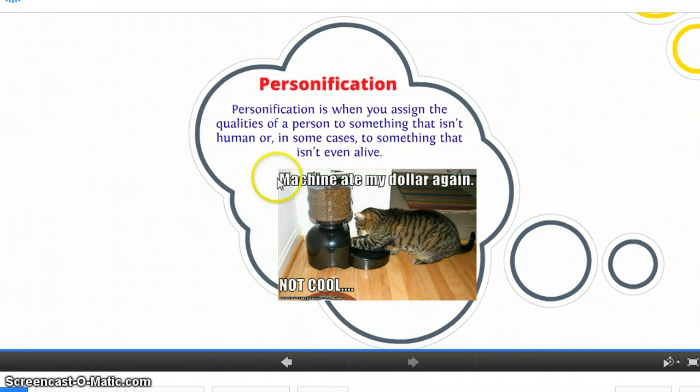But also this phrase, the machine ate my dollar. Now, the machine can't actually eat your dollar. So when you go to a vending machine and you say that, the machine can't actually eat anything because it's inanimate. So that line in itself is also personification. So either making an animal or making an inanimate object act in some way like a person is using personification.